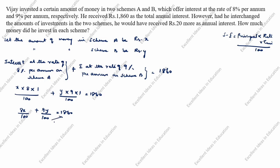Multiplying both sides by 100, we get 8X + 9Y = 186000. This is the first equation.